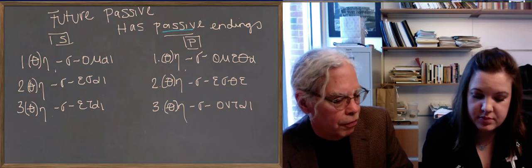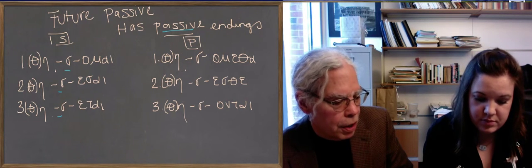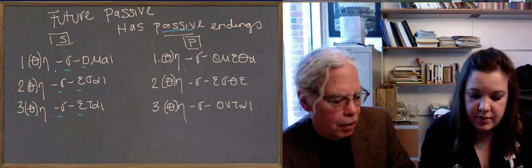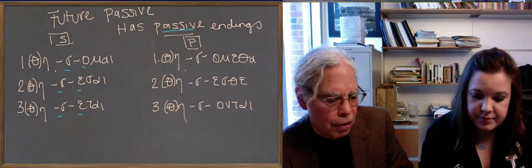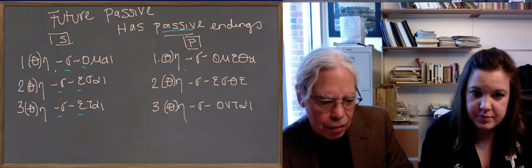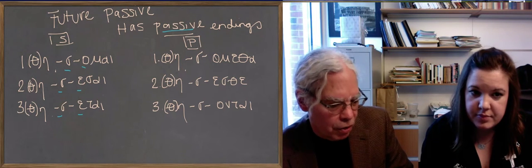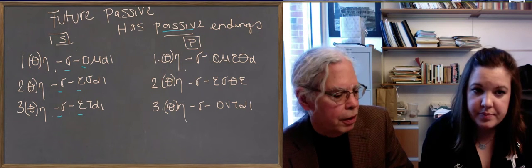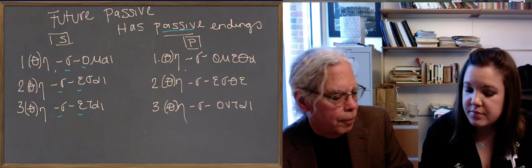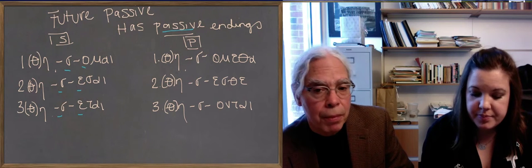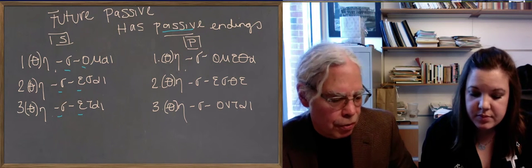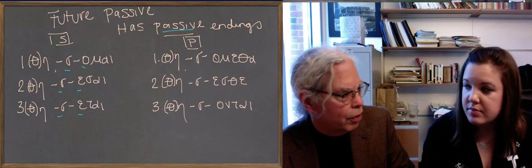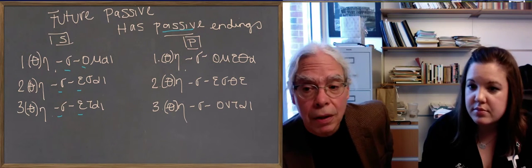And then you have the future marker, which is a sigma followed by an o or an e. That's the thematic vowel according to the regular system: o e e in the singular, o e o in the plural. So you've got the theta eta, or just the plain eta, the s that's the sign of futureness, and then the thematic vowel and the endings of the passive voice, the primary endings of the passive voice, those that are associated with the present. You wouldn't want future to be associated with past endings like the aorist does.